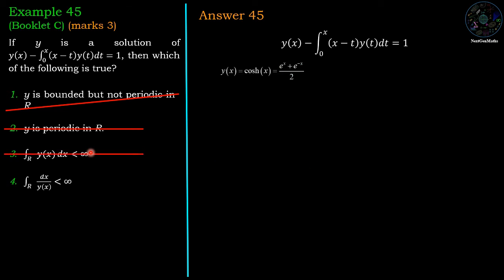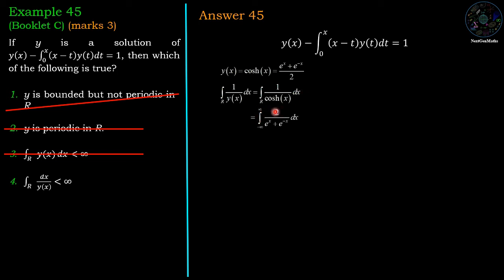Since the first three options are wrong, the fourth option must be correct. We evaluate: integration over R of 1/y(x) dx equals integration of 1/cosh(x) dx, which is integration from minus infinity to infinity of 2/(e^x plus e^{-x}) dx. Dividing numerator and denominator by e^{-x}, this becomes integration of 2e^x/(e^{2x} plus 1) dx.